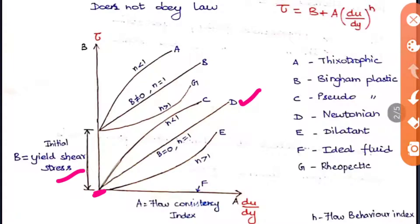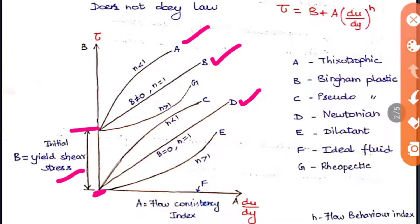For the upper three curves in the graph, b is not equal to 0 — they have an initial yield shear stress. When b ≠ 0 and n = 1, the fluid behaves as a Bingham plastic. When n < 1, it is a thixotropic fluid, and when n > 1, it is a rheopectic fluid. So these are the six types; excluding Newtonian, the other five will be seen in detail. When the line is horizontal at the base, that represents an ideal fluid, which does not exist.